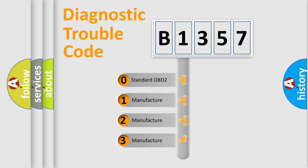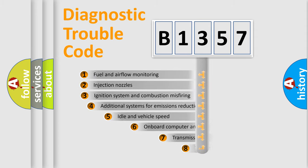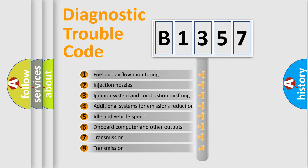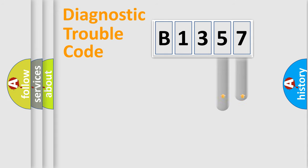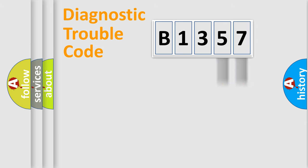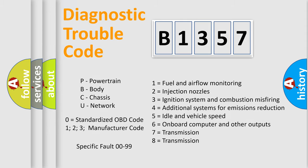If the second character is expressed as zero, it is a standardized error. In the case of numbers 1, 2, or 3, it is a manufacturer-specific error expression. The third character specifies a subset of errors. This distribution is valid only for the standardized DTC code, and only if the second character is expressed by the number zero.